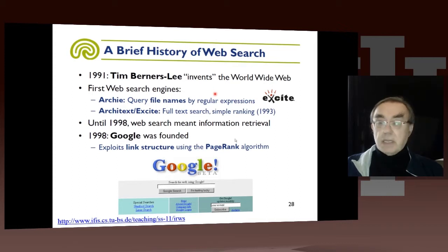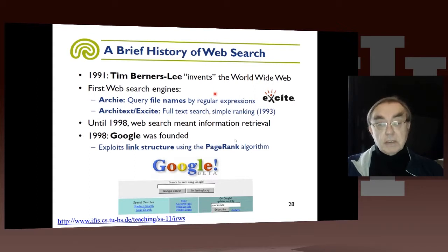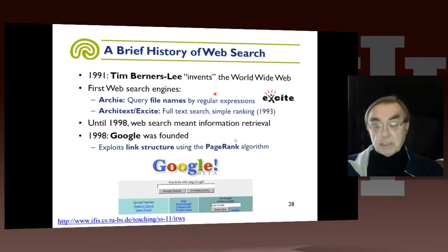Then came another generation, of which Google is the most famous, because it actually had a clever exploitation of the link structure, which gave far more accurate results. And when it returns, the relevance was much higher.